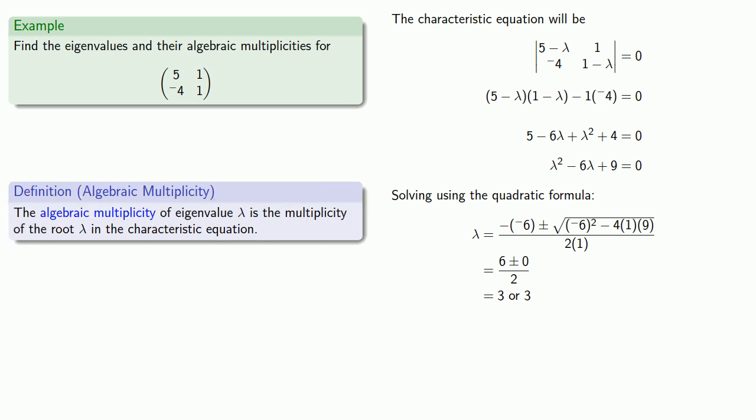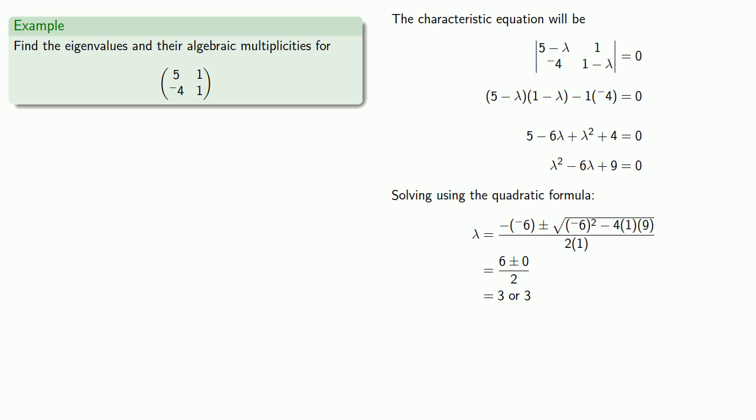Remember, the algebraic multiplicity of an eigenvalue is the multiplicity of the root lambda in the characteristic equation. In this case, lambda equals 3 has multiplicity 2 — it appears twice as a solution. So lambda equals 3 is an eigenvalue with algebraic multiplicity 2.